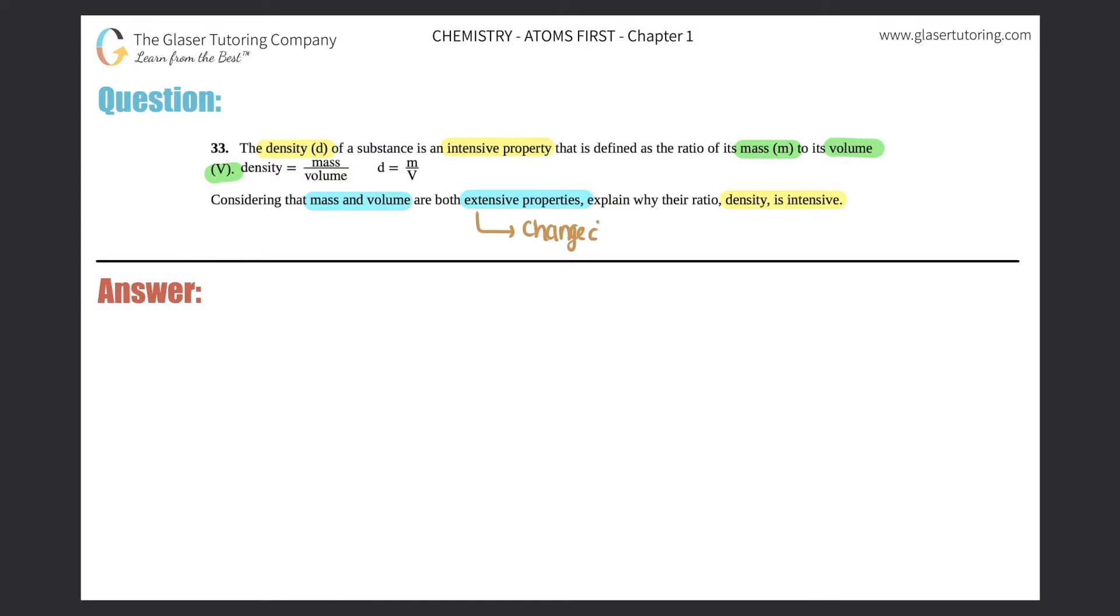And matter is just a fancy way of saying how much space something is taking up. So mass and volume are both extensive properties because it depends on how much space it is. If you have more mass, chances are 100% of the time you have more matter. So you could have a lot of mass, you could have a little bit of mass.